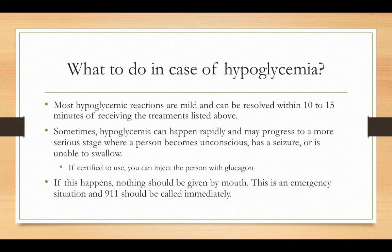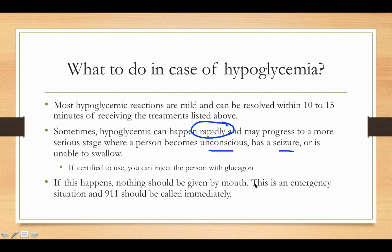A lot of hypoglycemic reactions are mild, and within 10 to 15 minutes the patient will be just fine. But sometimes it can happen so quickly it causes a seizure, or the person can become unconscious and unable to swallow. In that case, do not give them anything by mouth — that's a big no-no. Just call 911. If you're certified, you can inject the person with glucagon, but otherwise call 911.